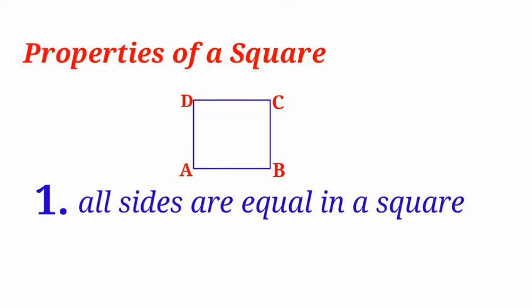That is, side AB equals side BC, which equals side CD, which equals side AD.